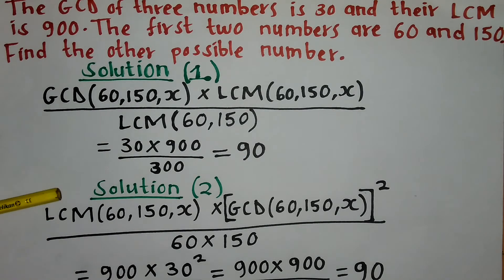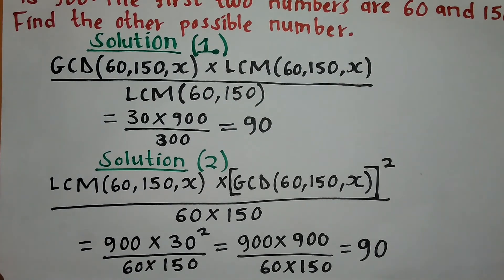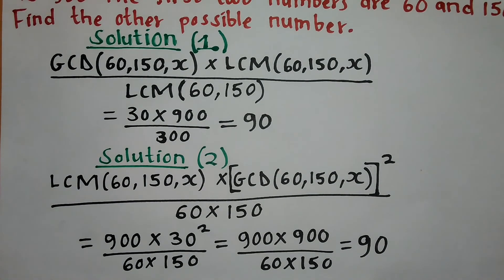Now let's look at the next way of doing it. We take the LCM of the three numbers and the GCD of the three numbers squared, and then divide by the multiplication of the two numbers, that is 60 by 150. So you're going to have 900 by 30 squared divided by the two numbers, that is 60 by 150. The square of 30 is going to be 900, so we're going to simplify this.